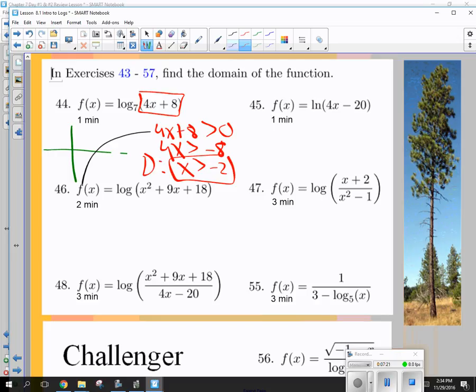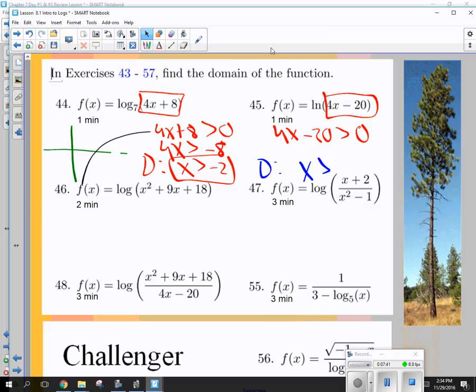How about this one? What's this going to be? Oh, this is the only part you have to worry about. 4x minus 20 has to be greater than what? 0. So, you go ahead and finish that. And then write domain. These other ones will be interesting. Can't wait to see what you do with those. And that's log intro.